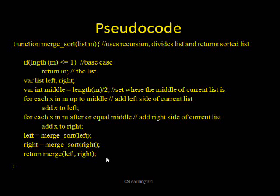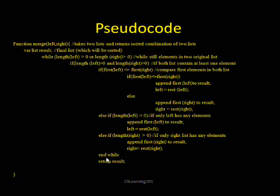And this is the Merge function. As long as there's something within one of the two arrays you're comparing, you compare the first element of each array and add them to a new list based on that. If one of the lists is already empty, you start adding elements from the other list that still has remaining elements.